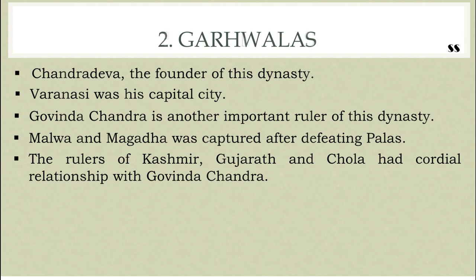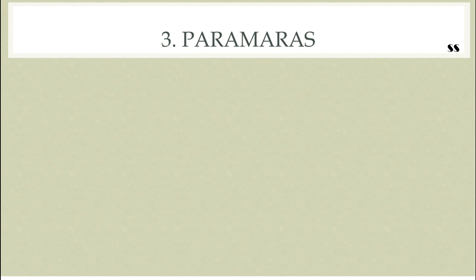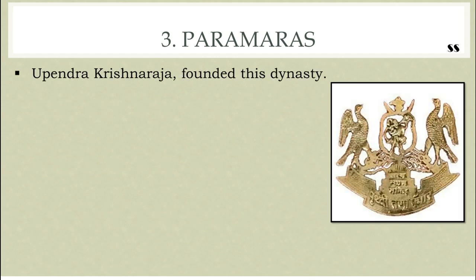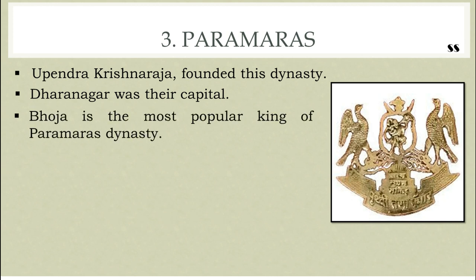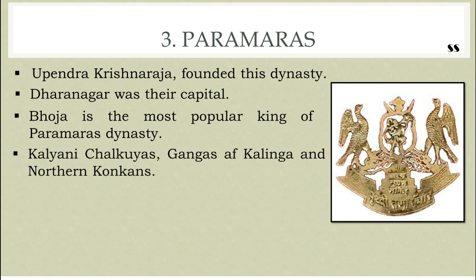The next dynasty is the Paramaras. Paramaras came to prominence after the decline of Pratiharas. Upendra Krishnaraja, the feudal king of the Rashtrakutas, founded this dynasty. Dharanagara was their capital. Bhoja is the most popular king of the Paramara dynasty. He extended the Paramara state by defeating the Kalyana Chalukyas, Gangas of Kalinga, and Northern Konkan. Though Bhoja experienced ups and downs in the political sphere, he remained undefeated in the area of literature — he himself was a poet. As the kings who came after him were weak, the Paramara dynasty declined.